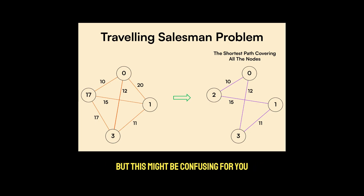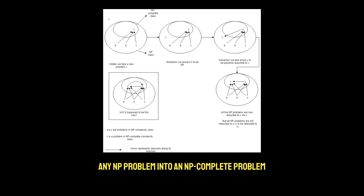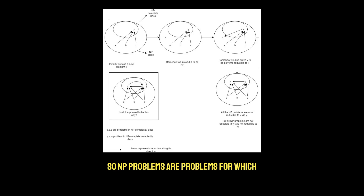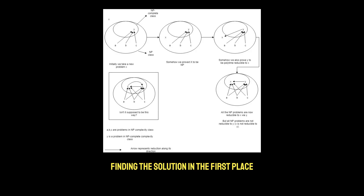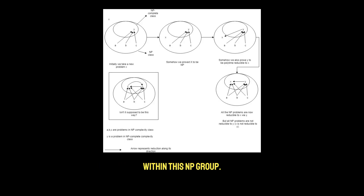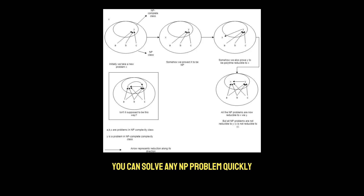This might be confusing. Why does transforming any NP problem into an NP-complete problem allow you to solve all NP problems? NP problems are problems for which, if you are given a solution, you can verify it quickly — in polynomial time. But finding the solution in the first place may not be easy. NP-complete problems are the hardest problems within this NP group. If you can solve an NP-complete problem quickly, you can solve any NP problem quickly because of reduction.